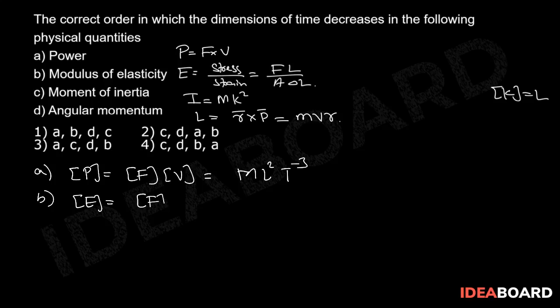Into dimensions of length by dimensions of cross-sectional area into dimensions of change in length which will be equal to M L to the power of minus 1 T to the power of minus 2.